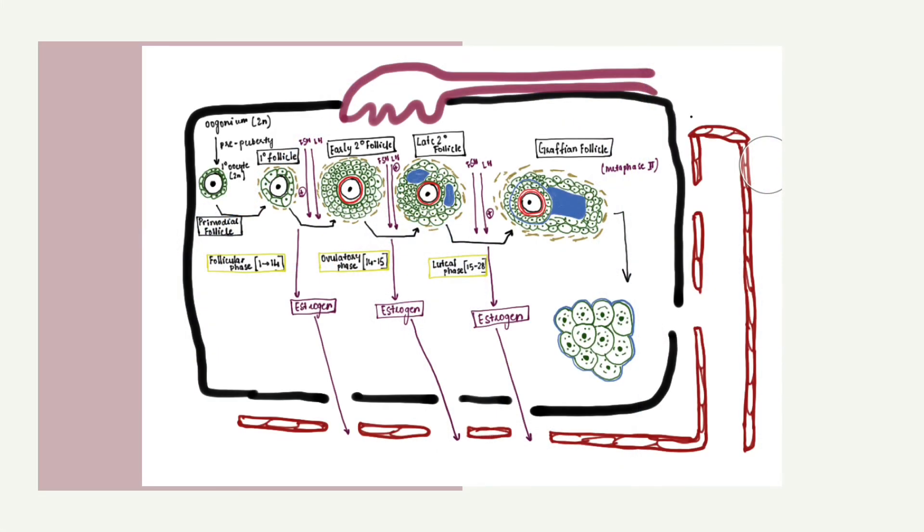Oogenesis is the process by which mature female genital gametes or ova develop from germ cells. Primordial germ cells multiply during fetal development. At birth, the ovary contains around 400,000 primordial follicles, which contain primary oocytes.